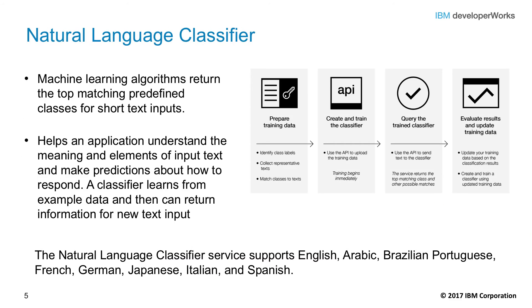The IBM Watson Natural Language Classifier Service uses machine learning algorithms to return the top matching predefined classes for short text input. You create and train a classifier to connect predefined classes to example text input, then use the service to identify classes associated with new input text. Natural Language Classifier applies best to simple identification scenarios — for example, classifying input and taking actions, such as routing users' questions to the correct person or classifying issues by severity.